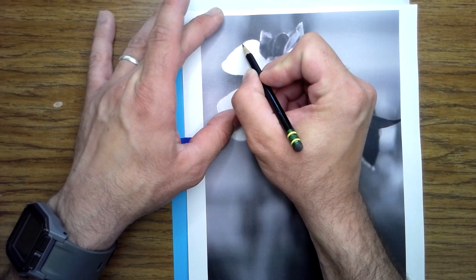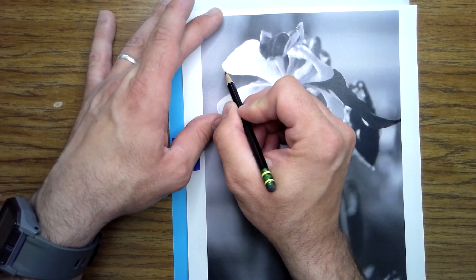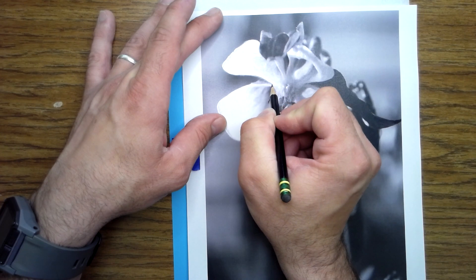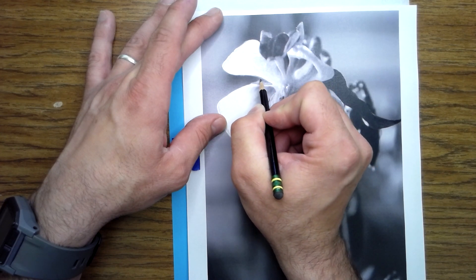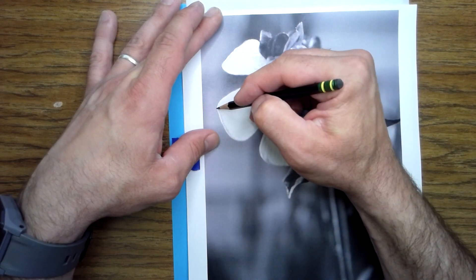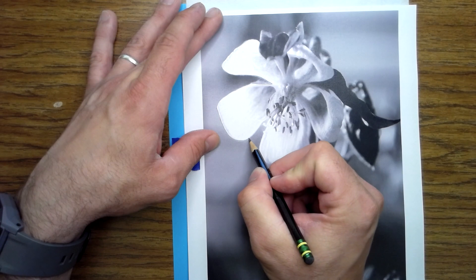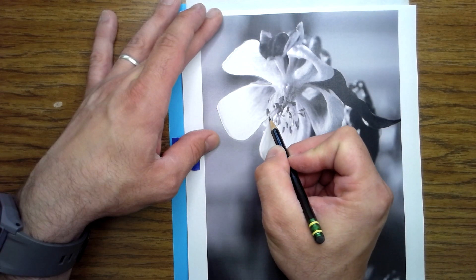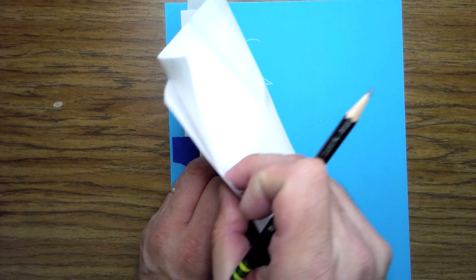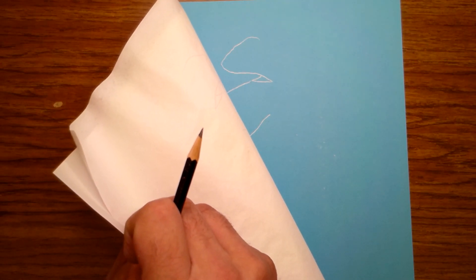So I just go around the edge of the flower and wherever there's light against dark, a little bit of pressure, just tracing. Now check it every once in a while. So I stop there and I can check to make sure that it's transferring. And you see what's happening - the outline of the forms is transferring onto the paper.